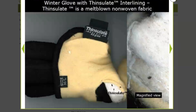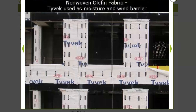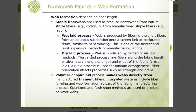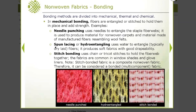This winter glove has Thinsulate interlining — a non-woven fabric used inside. Tyvek, made out of olefin, creates paper-like structures from olefin fibers used to protect buildings during construction from wind or rain. We talked about wet-laid and dry-laid processes for creating non-woven fabrics. Needle punching is a mechanical method; hydro-entanglement uses water to entangle; stitch bonding uses stitches to keep the fiber web together. Thermal bonding uses heat; chemical bonding uses resins or other adhesives.